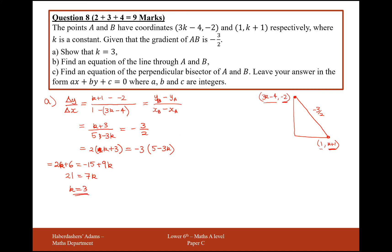Make sure your working for this question is really clear. Now, find an equation for the line going through A to B. This is going to be y = mx + c, where the gradient is minus 3 over 2, so y = -3/2 x + c. We're going to plug in either one of these coordinates — the easiest one to use is (1, 4).